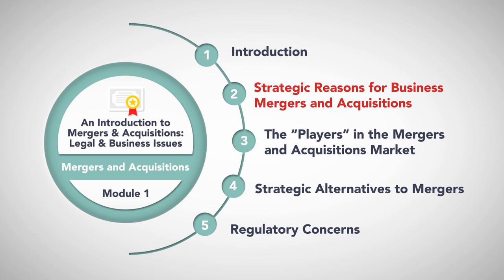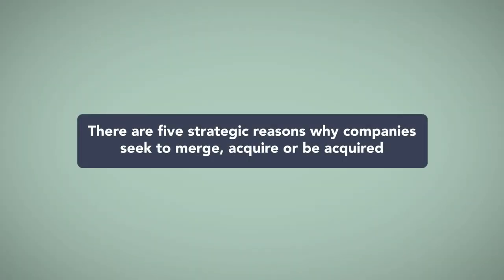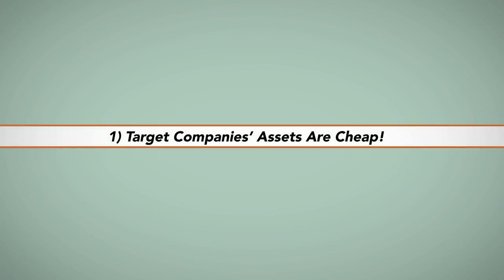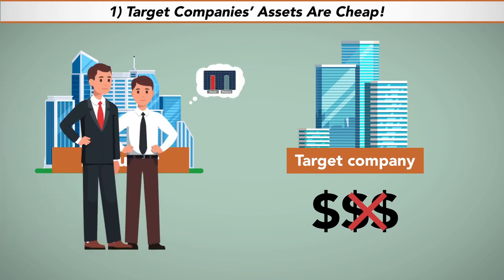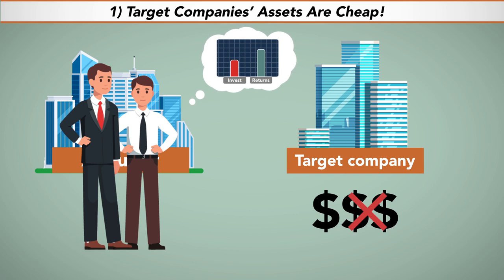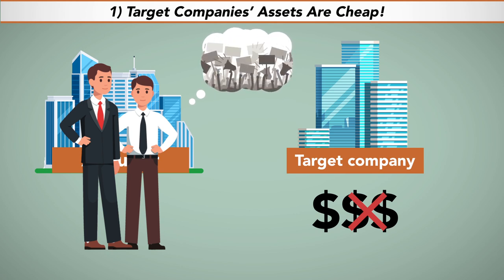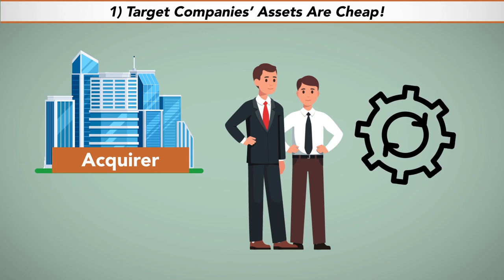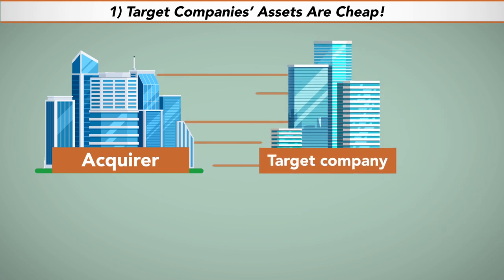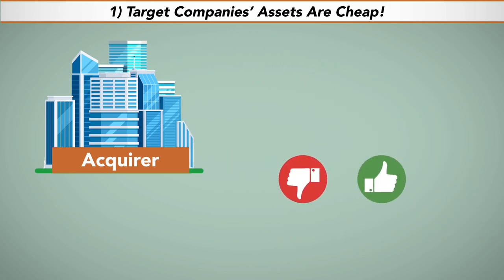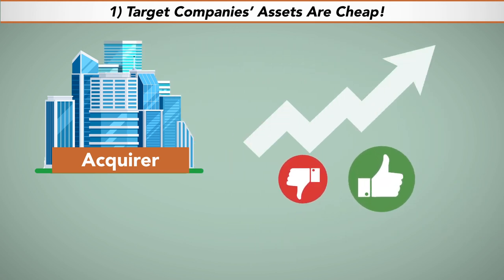There are five strategic reasons why companies seek to merge, acquire, or be acquired. One: target companies' assets are cheap. Cheap assets are at the center of many companies' motivations to acquire or merge. Management teams of publicly held companies must realize high returns on investment or face shareholder dissatisfaction. They are publicly entrusted with the shareholders' invested funds to produce optimal returns in exchange for capital. The acquisition of another company is like any other investment, presenting an opportunity for upside return and positive cash flow.